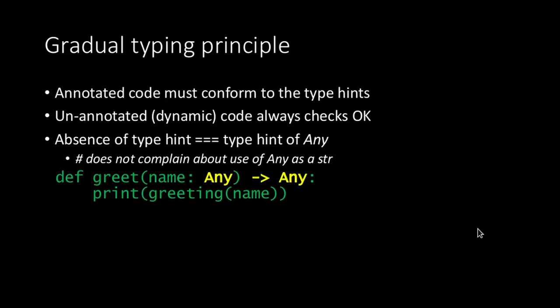In order to do gradual typing, the annotated code needs to conform to the type hints standard. If we don't provide any type hint, this means we use something called 'any', which means basically anything — whatever you put there is okay because we didn't limit it in any way. So 'greet' as defined earlier becomes: name is actually anything, and it can return anything.